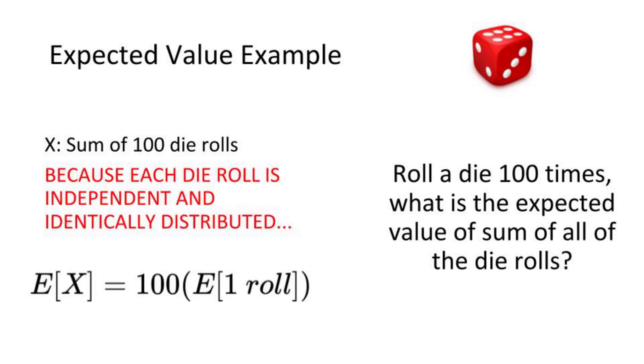First you have to realize that each roll of a die is IID, or independent and identically distributed. Each roll has the exact same conditions as any other roll and they don't affect each other.